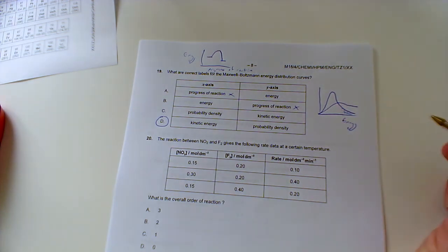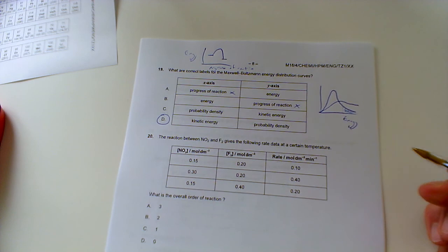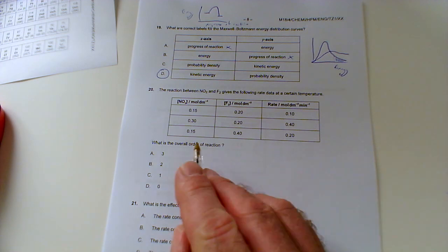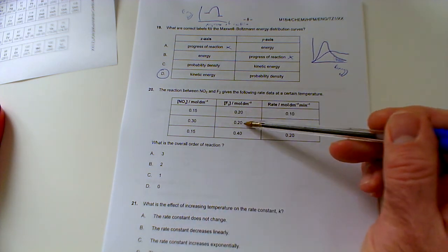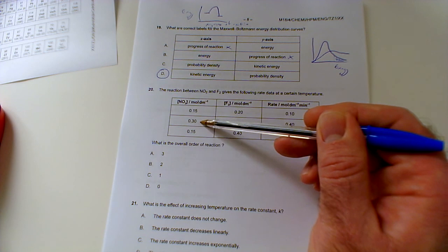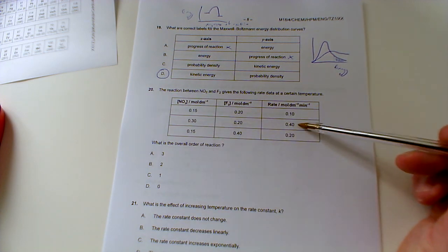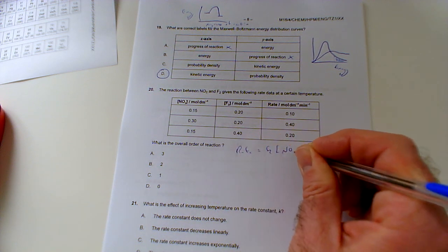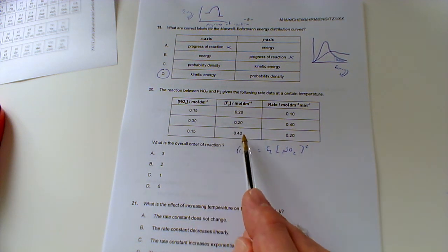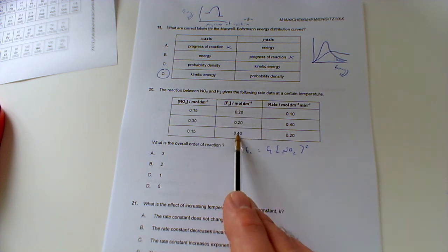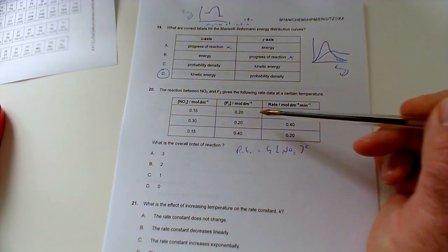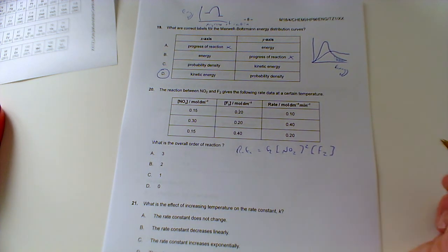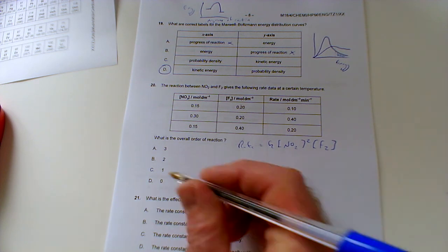Number 20: the reaction between nitrogen dioxide and fluorine gives the following rate data at a certain temperature. What's the overall order of reaction? Let's look here. They keep fluorine constant but they double the concentration of nitrogen dioxide and the rate quadruples, it's four times faster. So it's second order with respect to NO2. Let's compare this reaction and this one. Here they keep the concentration of nitrogen dioxide the same but they double the concentration of fluorine and the rate is twice as fast. So it's going to be first order with respect to fluorine. So second order plus first order, two plus one, that's going to be three.